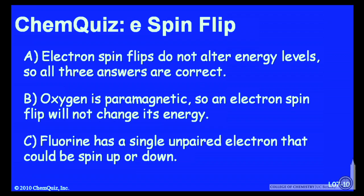Or C, fluorine has a single unpaired electron. It could be spin up or spin down. Consider those three possible arguments and make another selection.